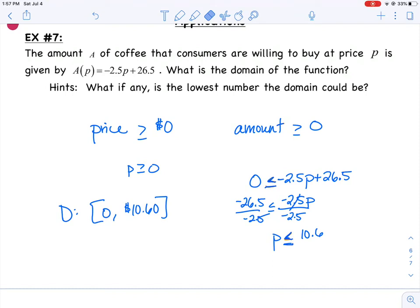But let's talk about what our restrictions might be. Well, it doesn't make sense for our price to be negative, right? There's no such thing. I mean, they're not going to pay you to drink their coffee. So our price has to be greater than or equal to zero. If price is P, then P has to be greater than or equal to zero. So that's our minimum.